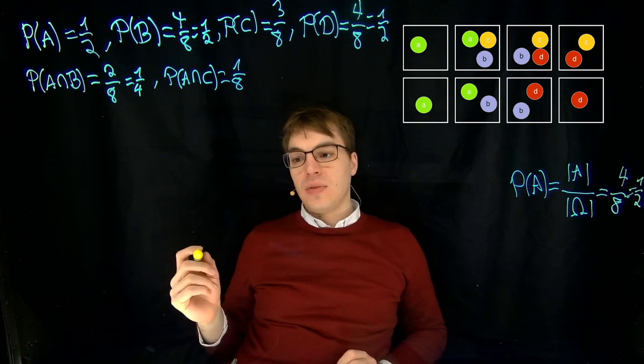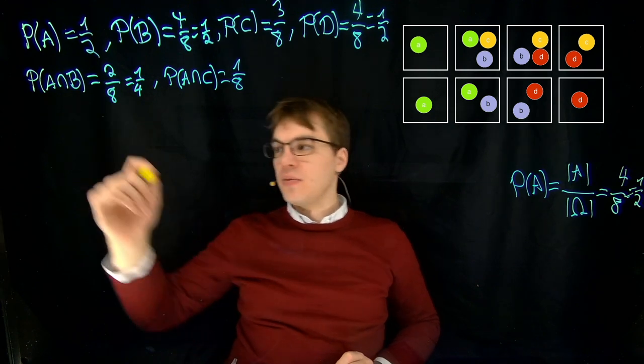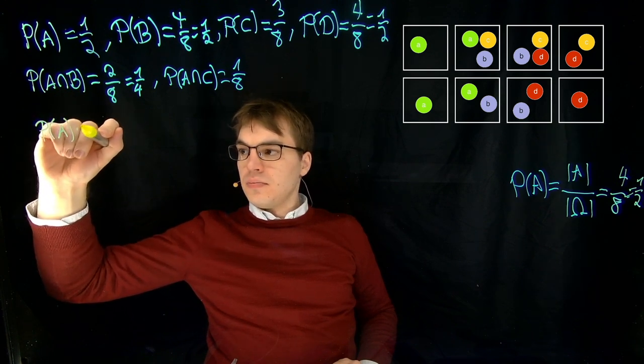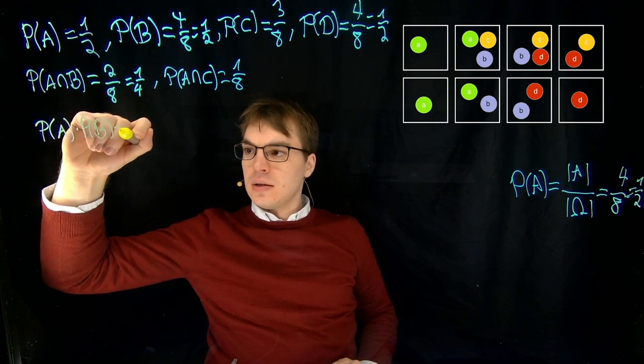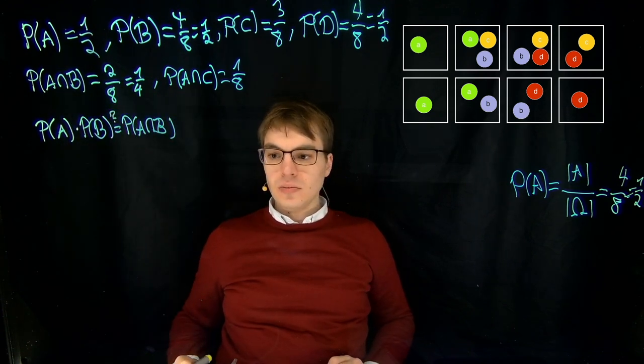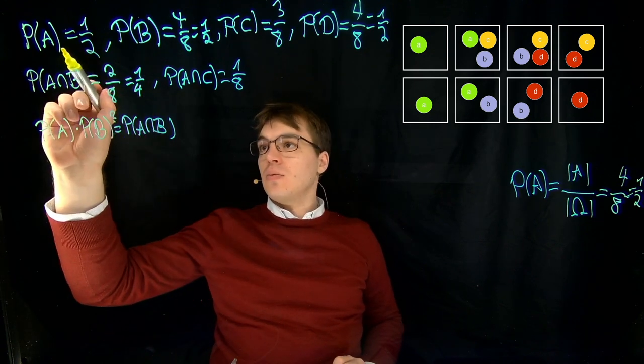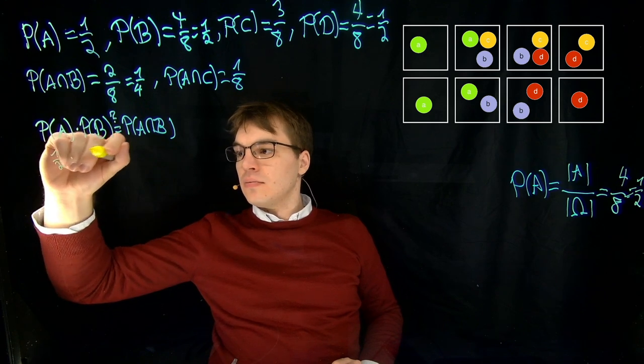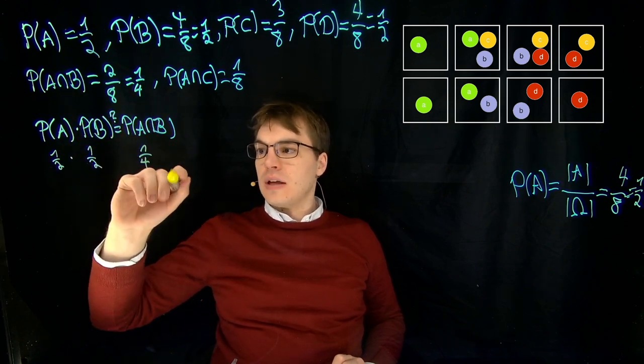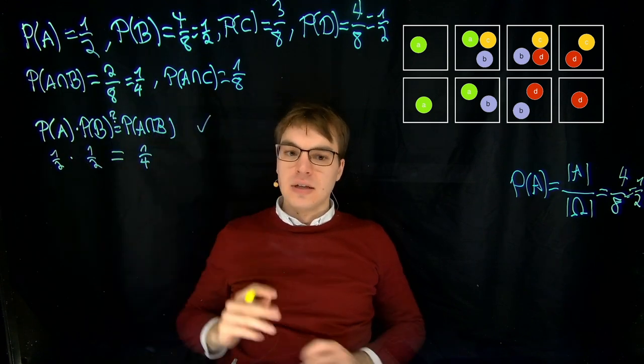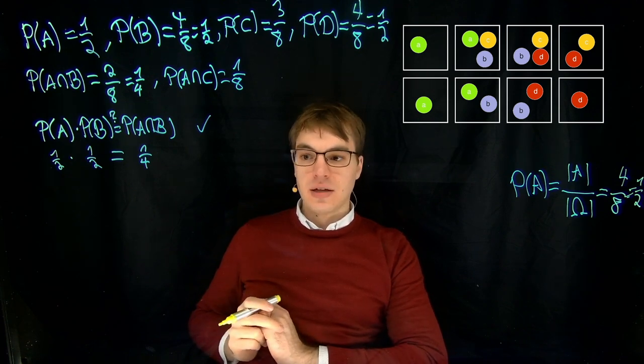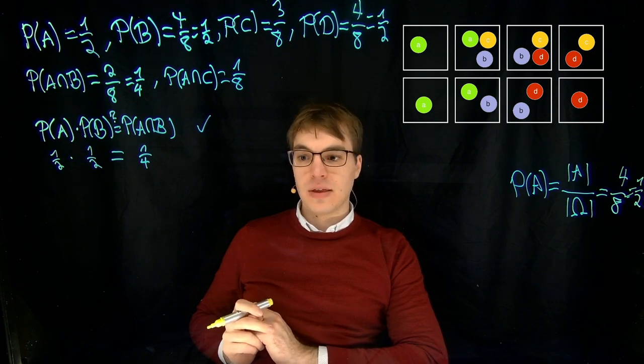Let's check whether the events A and B are statistically independent. And what this means is checking whether this holds. Let's put a question mark up here. We just fill in, we have a half and a half. And we have this over here, so one divided by four. And this indeed holds. So yes, we have statistical independence here. And the same way we can also check our other events whether they are statistically independent.